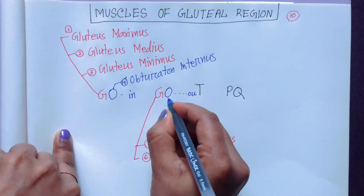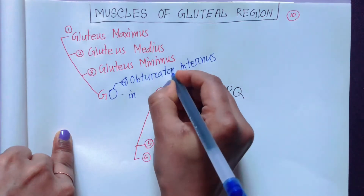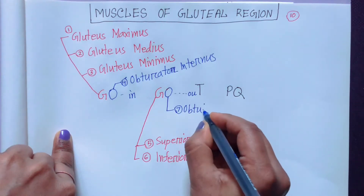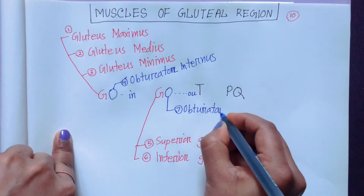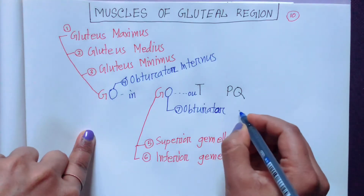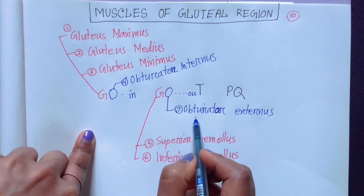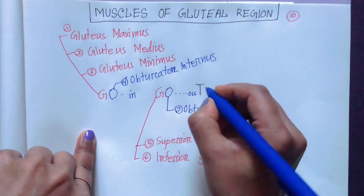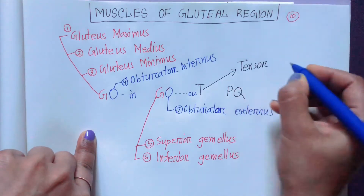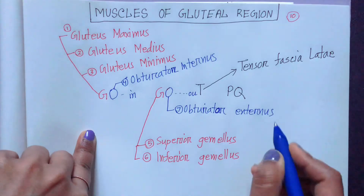Number five — this second G, in GO OUT, is for gemellus muscles: superior gemellus and inferior gemellus. Then this O is for obturator — obturator out means externus — so obturator externus. Then T is for tensor fascia lata.